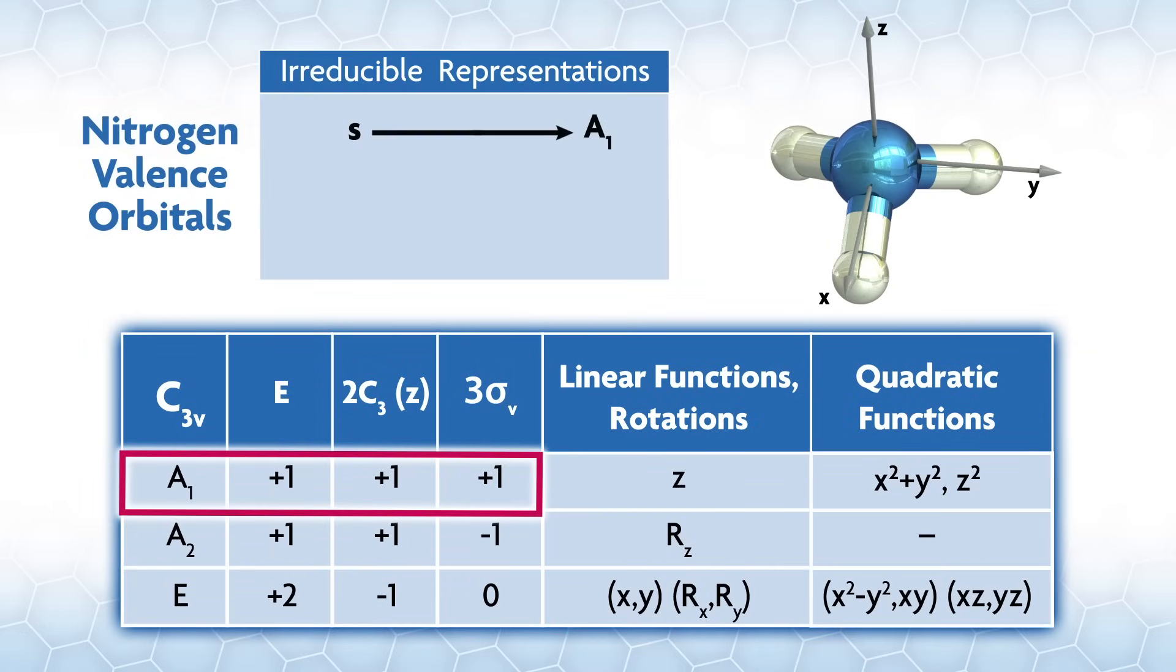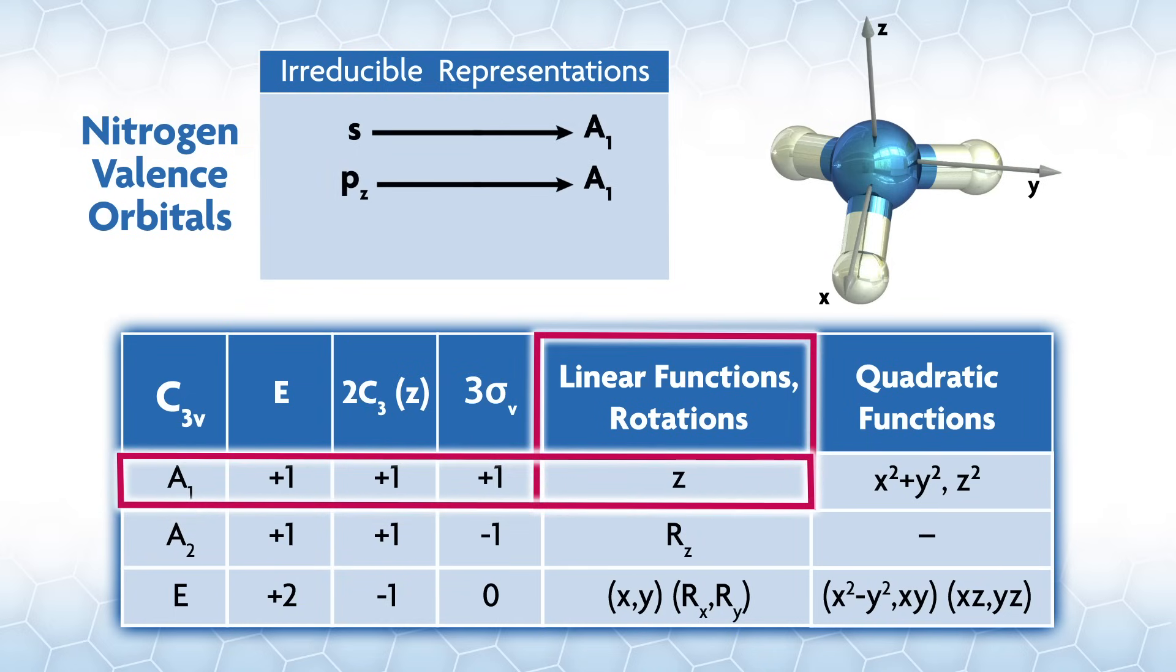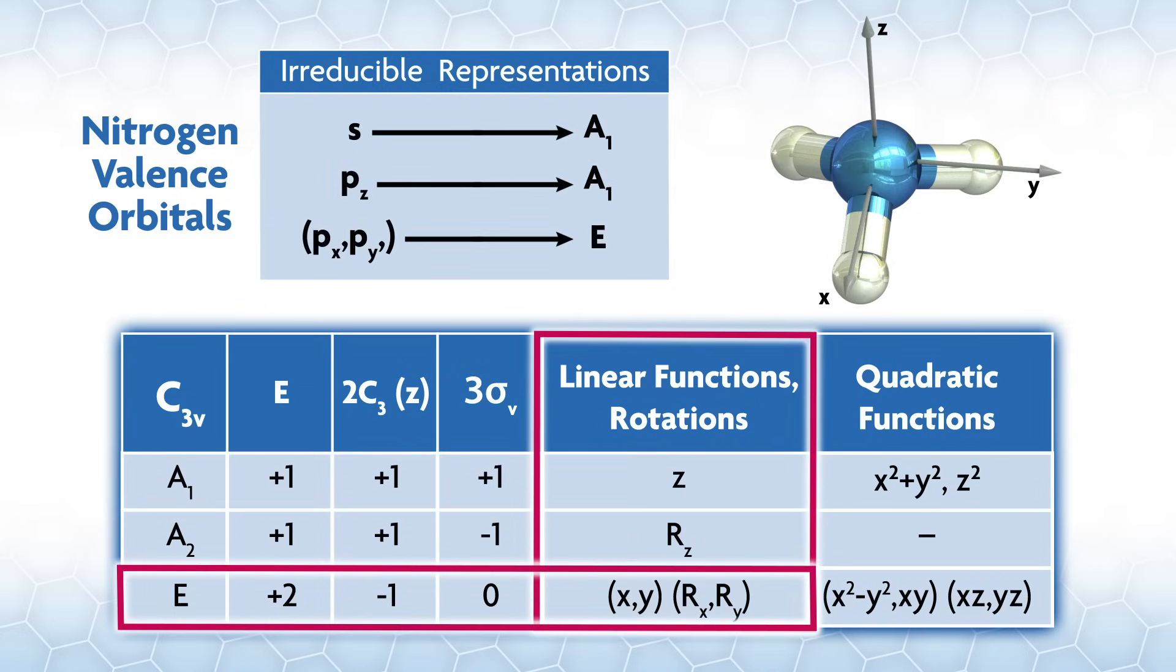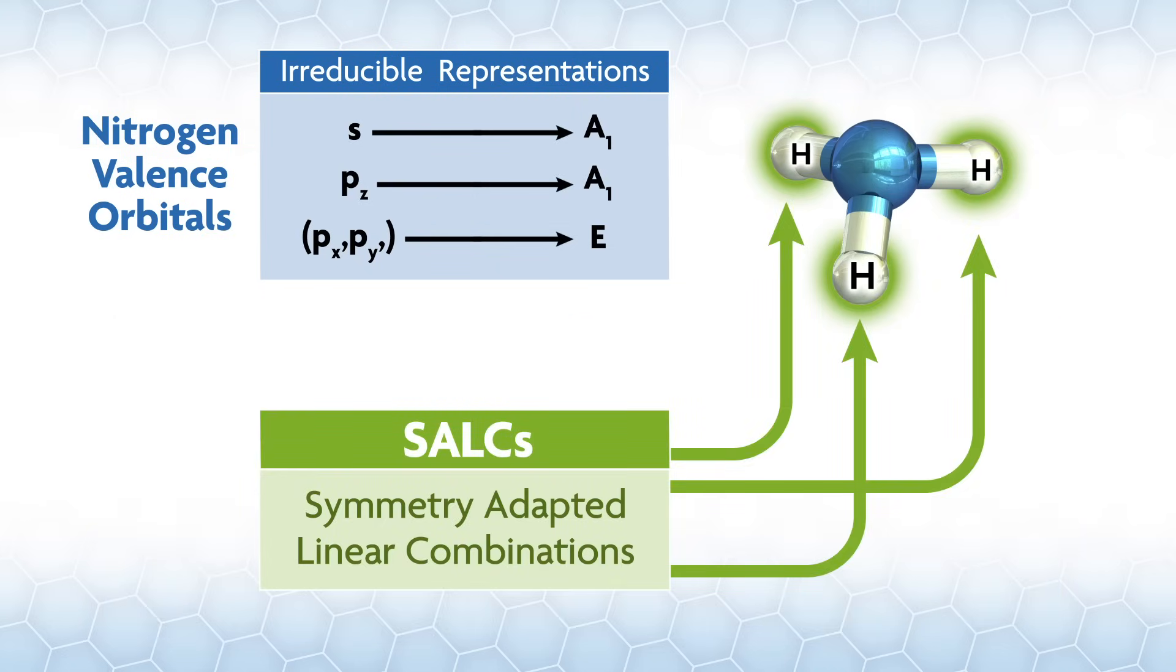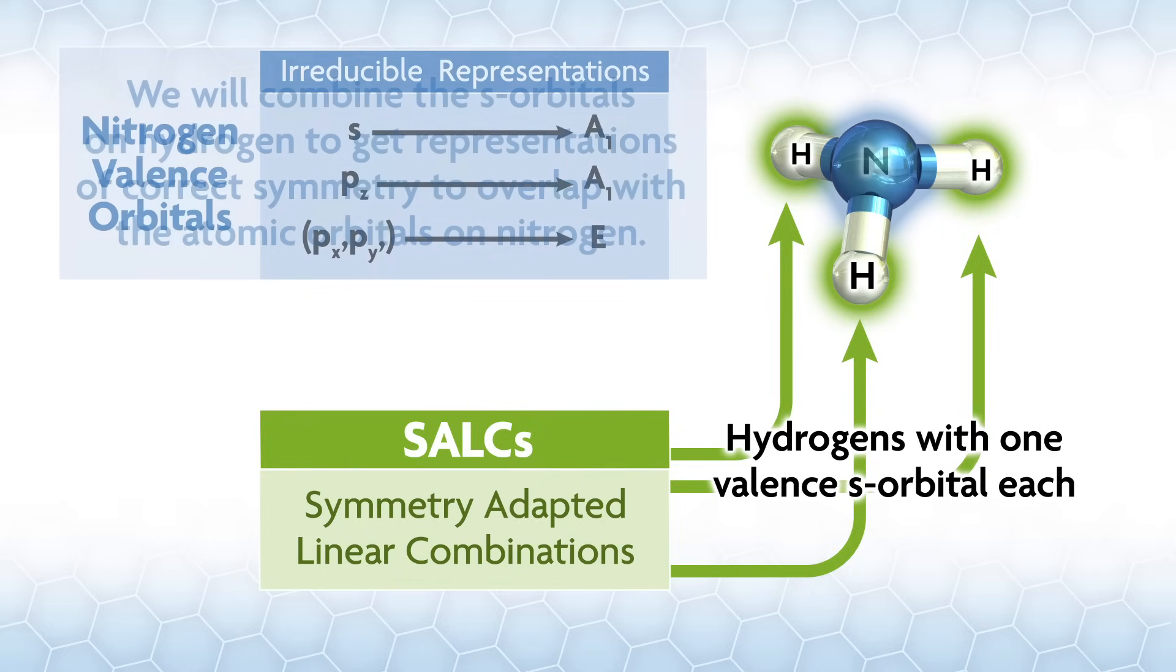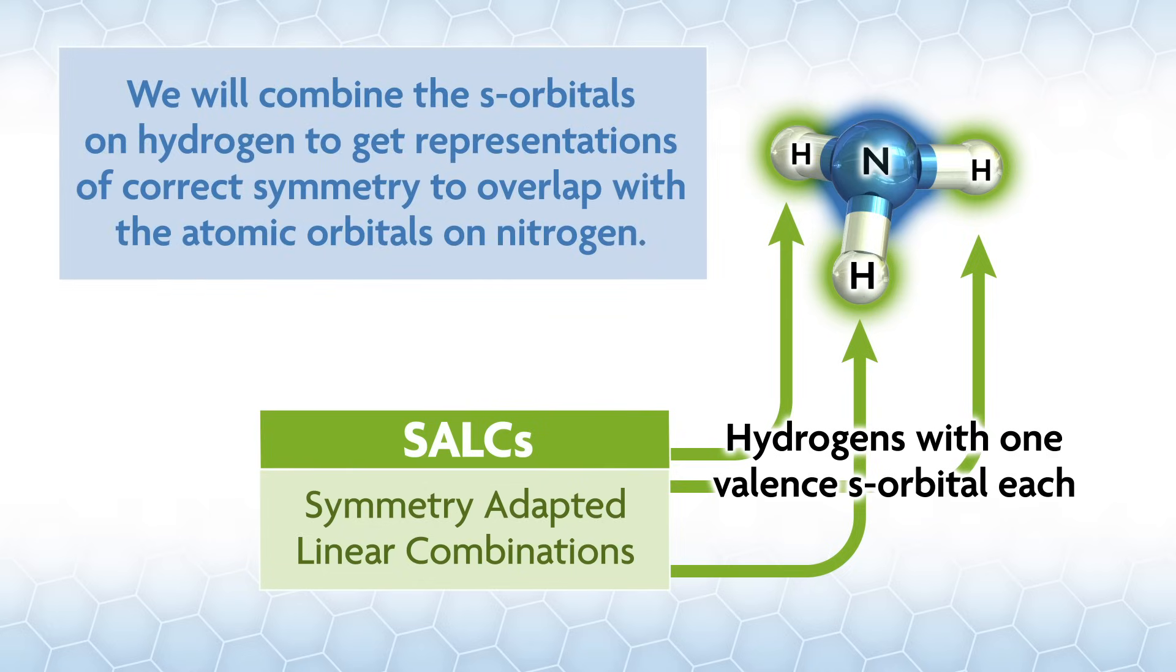From looking at the C3v character table, we can tell what irreducible reps the valence orbitals on nitrogen are in. S is in A1, Pz is in A1, and PxPy are in E. We are going to generate SALCs, meaning linear combinations of the atomic orbitals of the hydrogens.